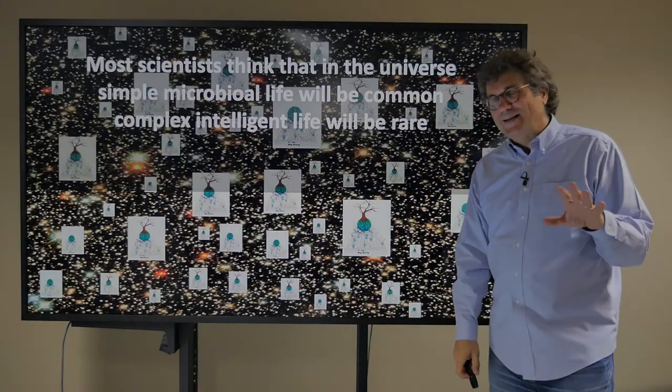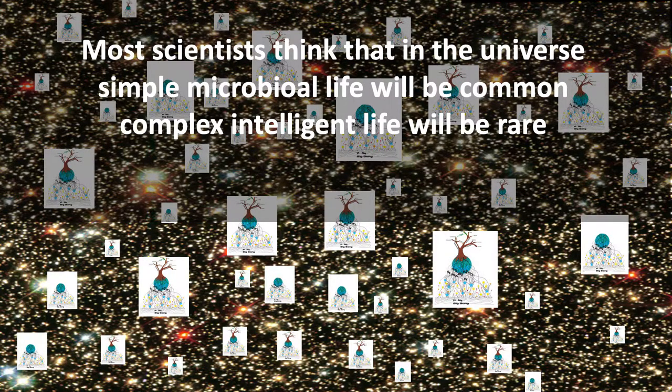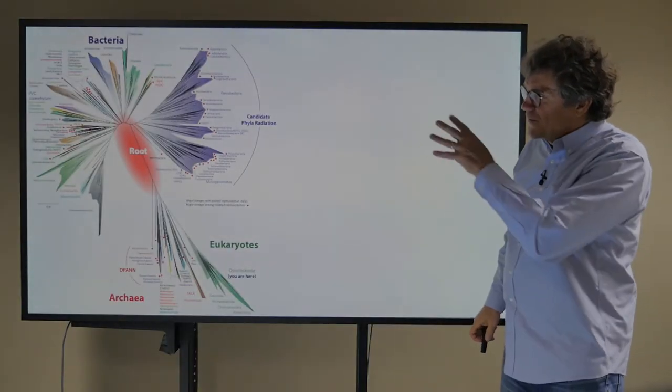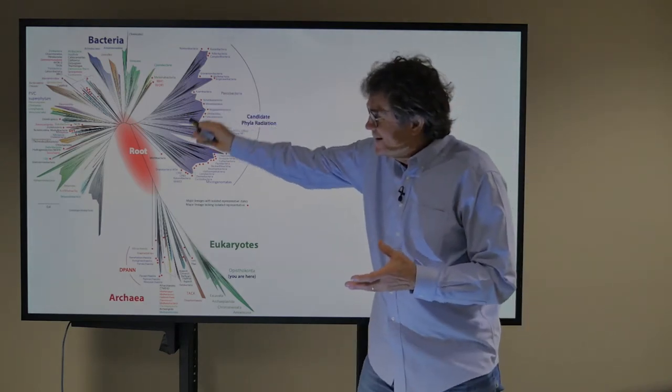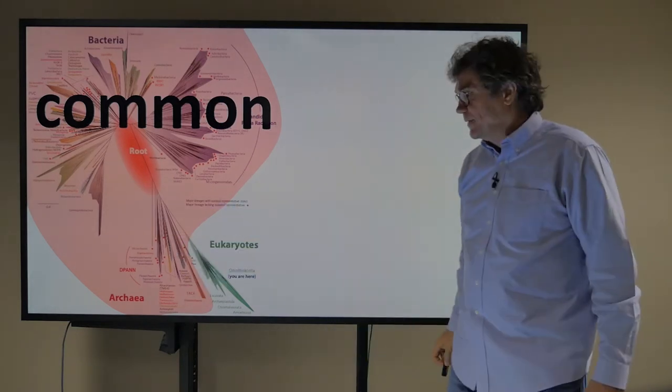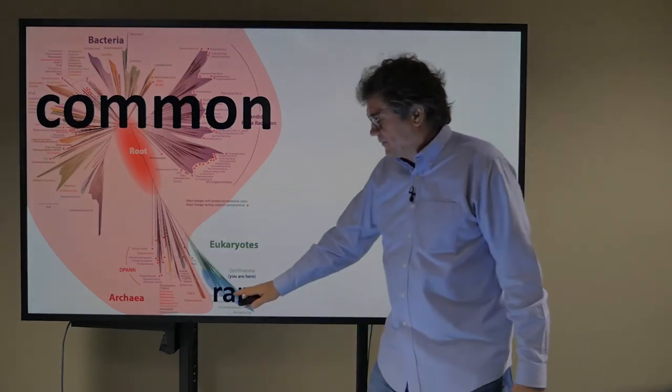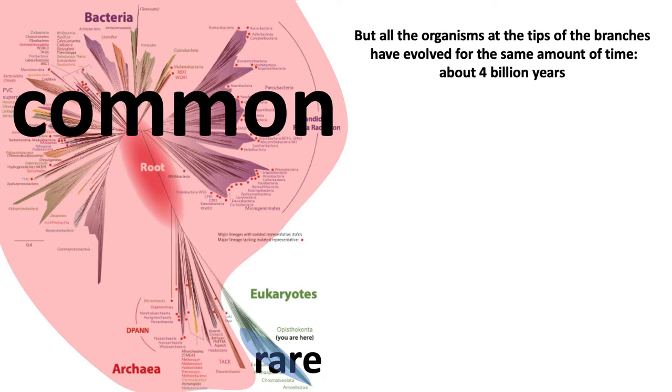So when scientists say this thing about simple microbial life will be common and complex intelligent life will be rare, they're thinking of the following thing. They're saying that in this beautiful tree of all life on Earth, all of this kind of life will be common, and down here where we live, it will be rare. But all the organisms at the tips of the branches have evolved for the same amount of time, about four billion years in this tree. Might they all be equally complex and equally rare?